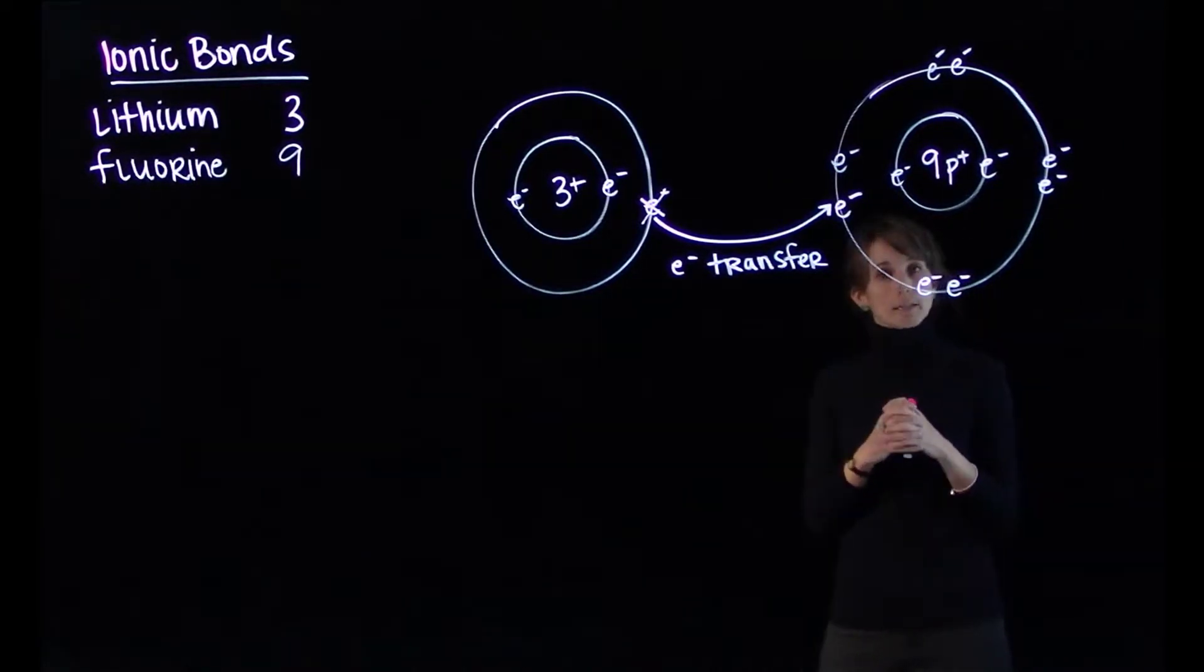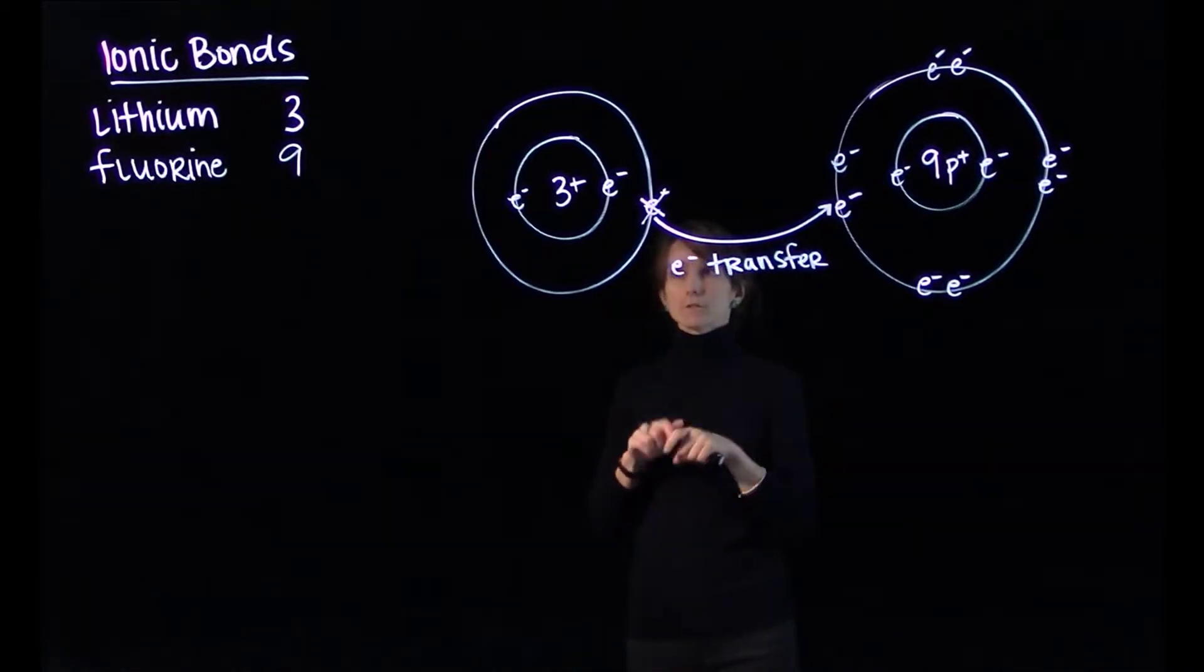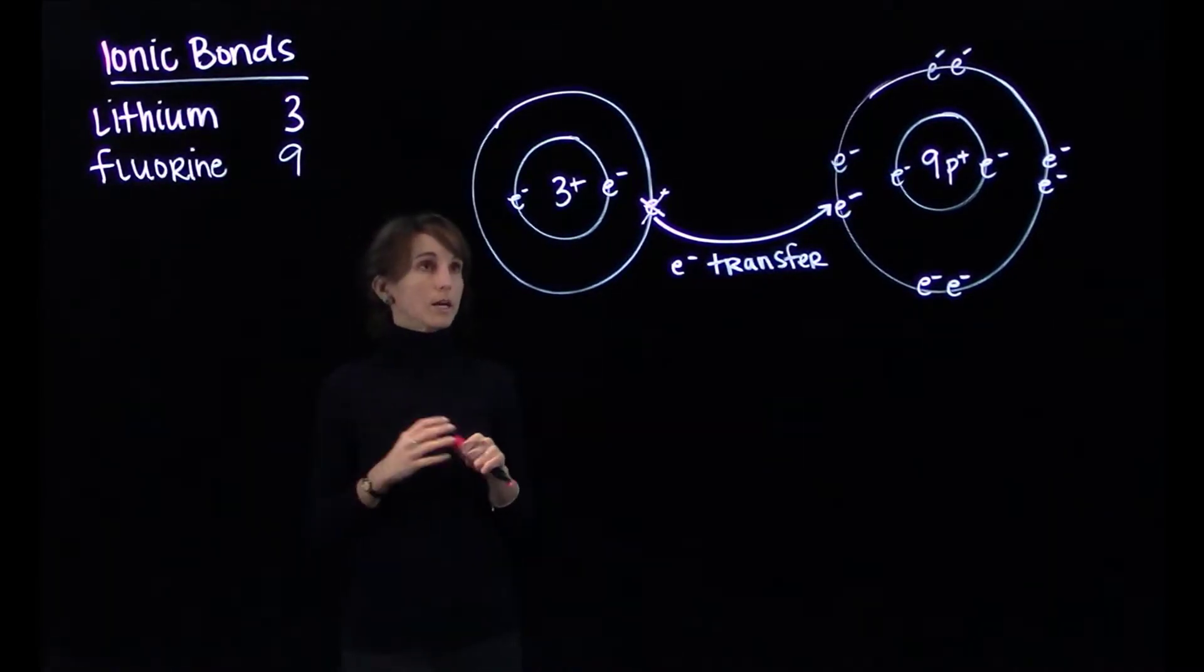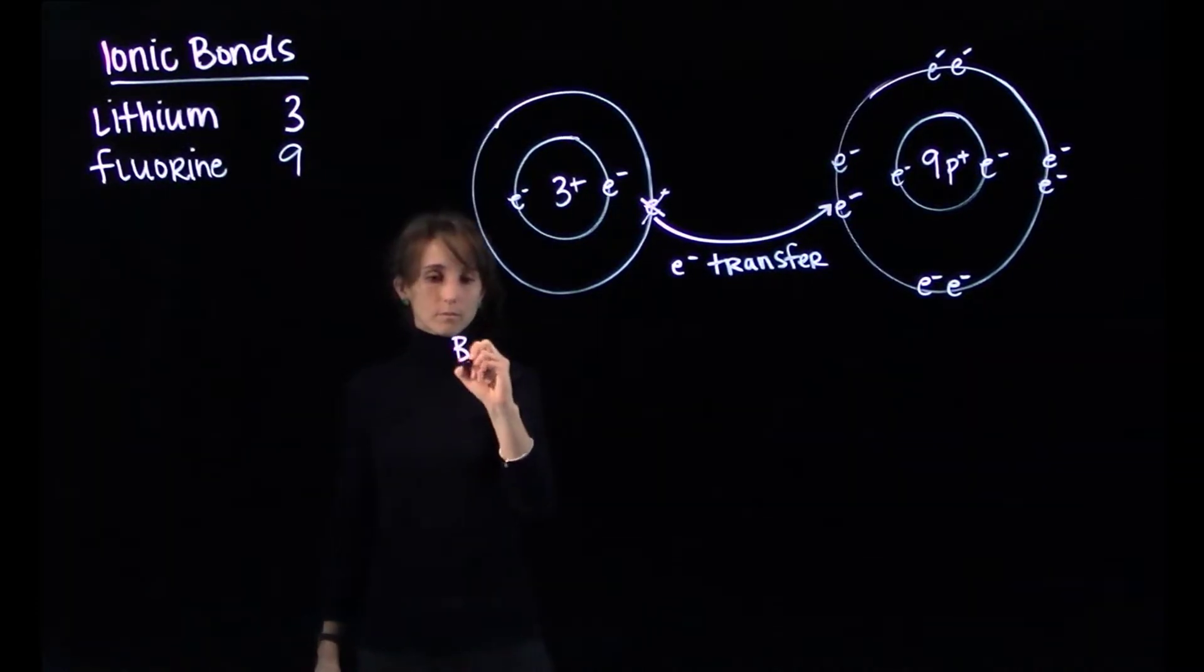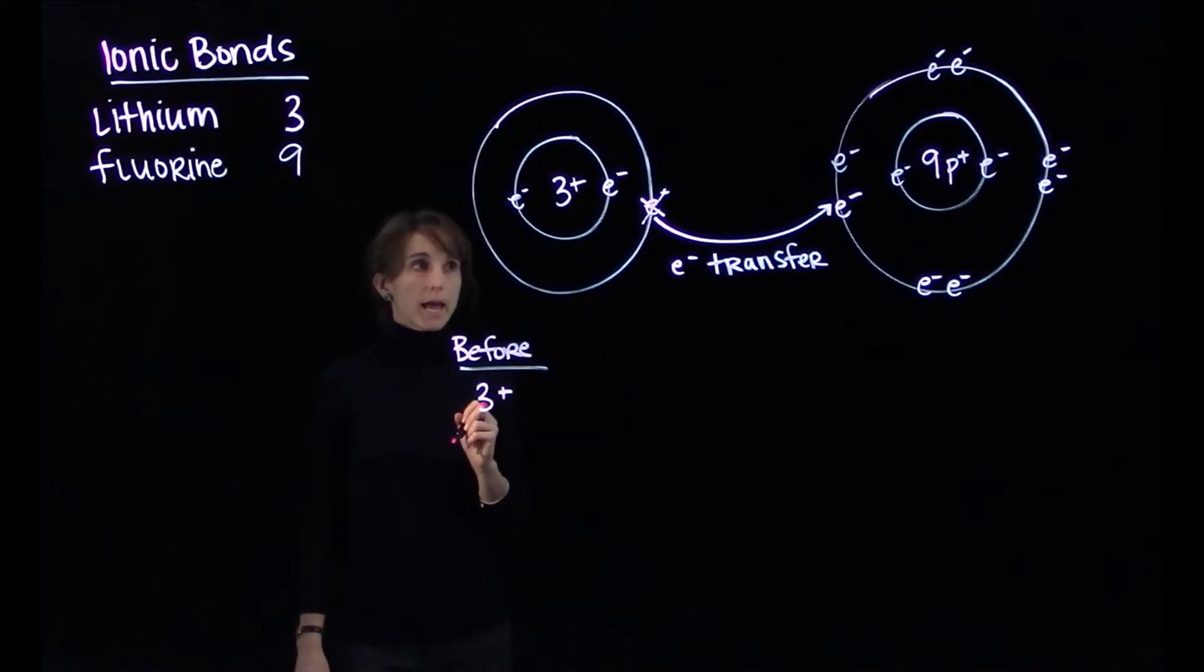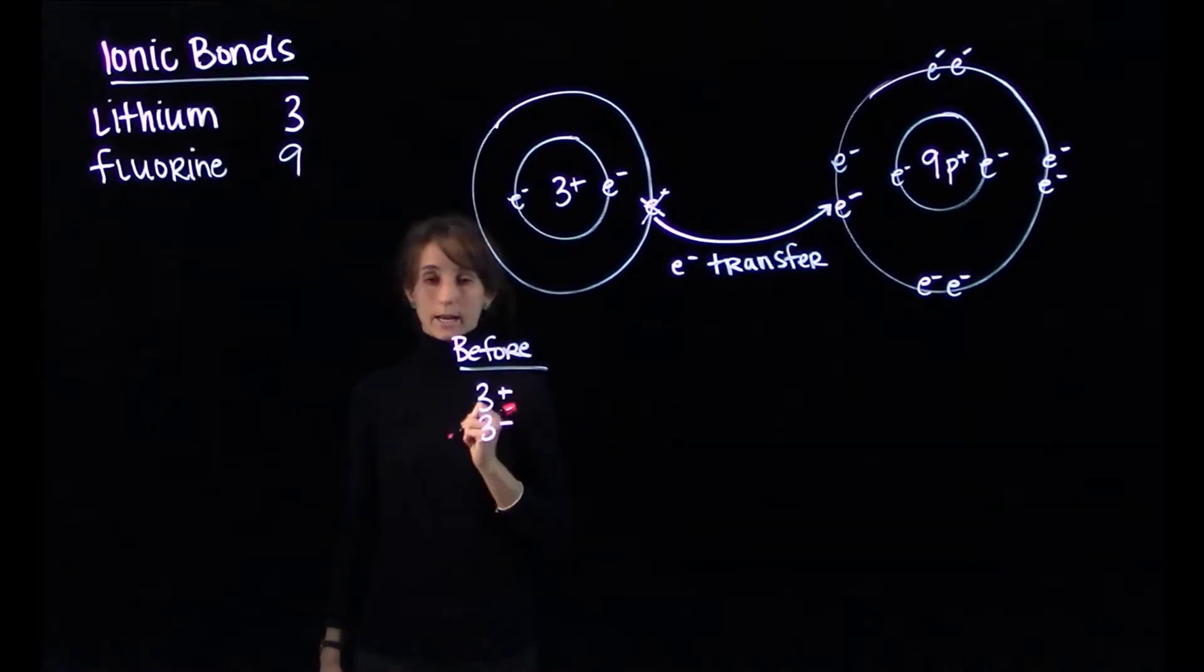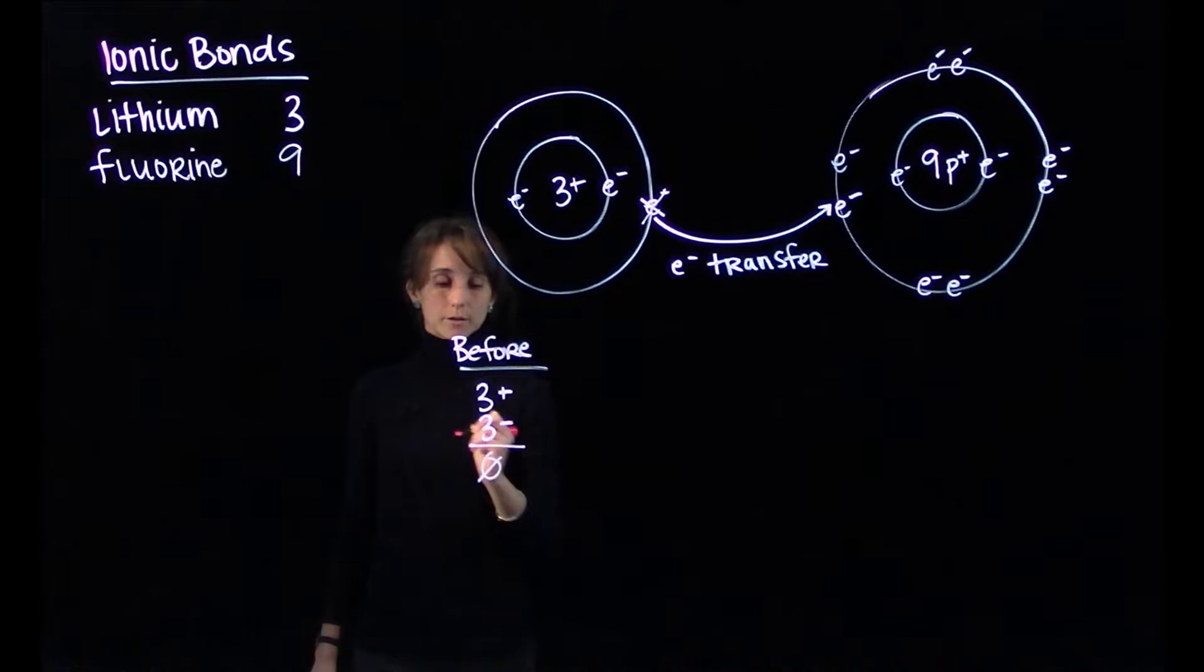That's what causes an ionic bond to occur, is that electron transfer. But we have to look a little bit deeper and see what the consequences of that electron transfer is. So for lithium, let's think about before the electron transfer. Before, the number of protons was three, so we had three positively charged subatomic particles. And we had three electrons, so three negatively charged particles. So before that electron transfer, the atom was neutral.